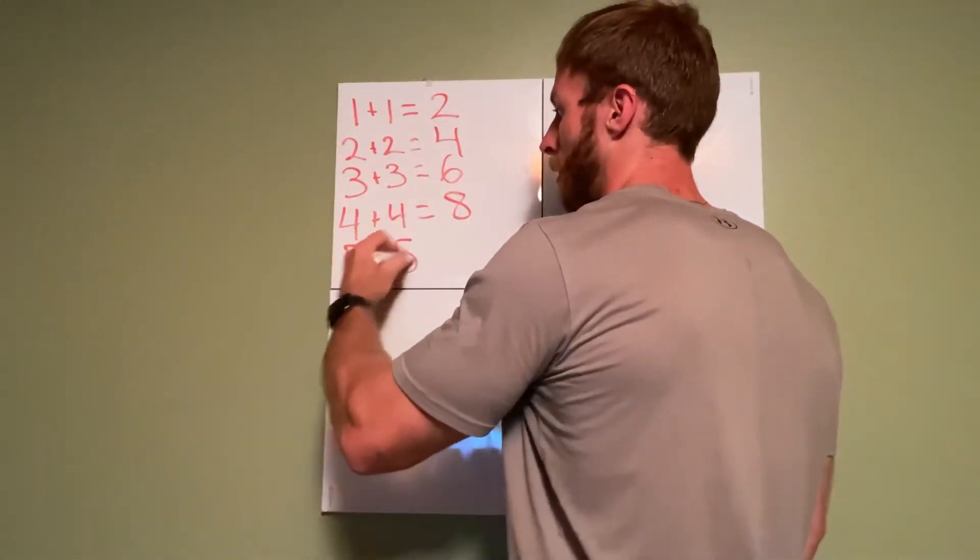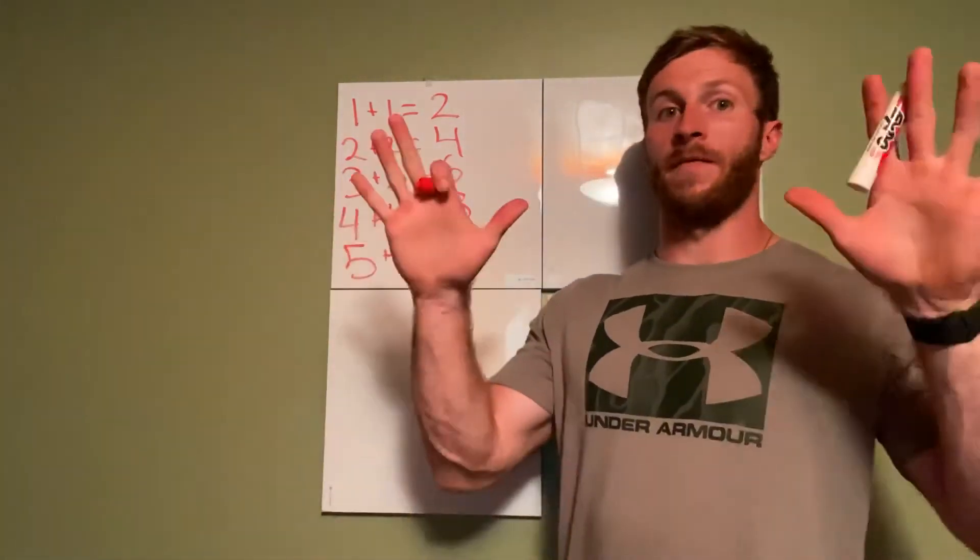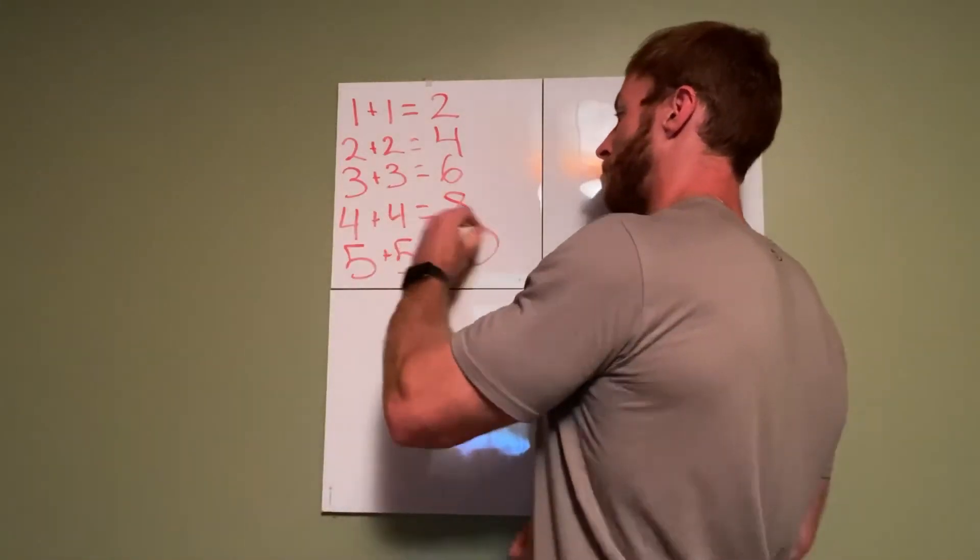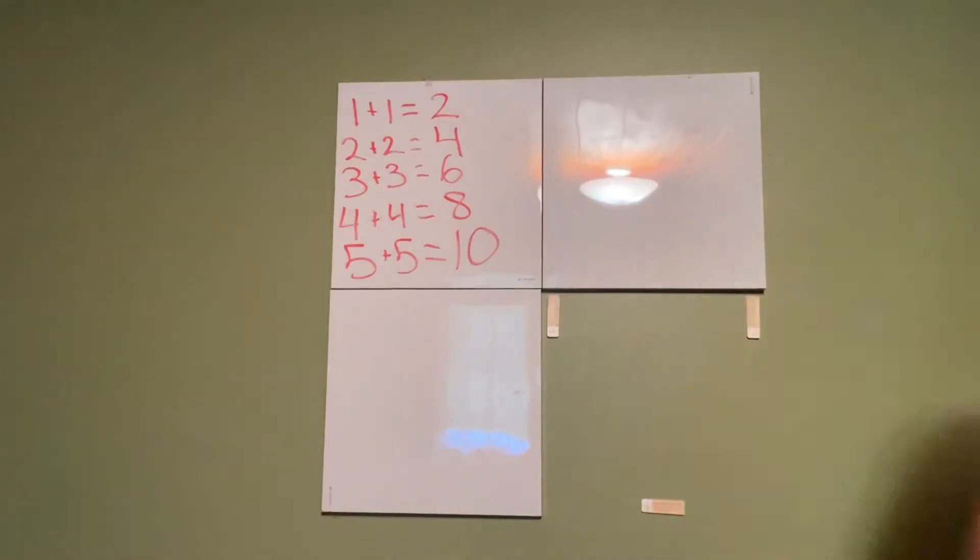And last but certainly not least, 5 plus 5 equals, how many fingers do we have all together? 10. Alright, 5 plus 5 equals 10. Good job.